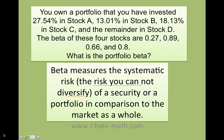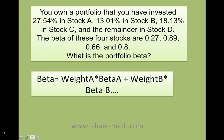So how do we do this problem? The formula is the following: you're going to grab every single weight of your stock — so 0.2754, remember I'm putting it in decimals — 0.1301, 0.1813, and then you're going to multiply each one by each beta.